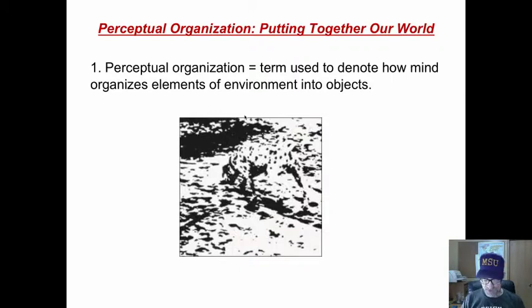Our mind organizes the elements of the environment into objects. That term, perceptual organization, is the term used to denote that. We perceive or we perceptually organize the items that we see. These are just random black and white pictures, but our mind perceives and creates organization and all of a sudden we see a Dalmatian sniffing the ground.